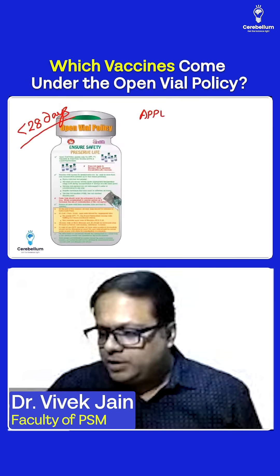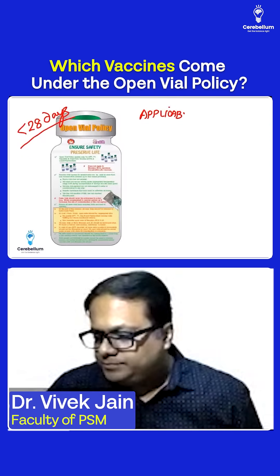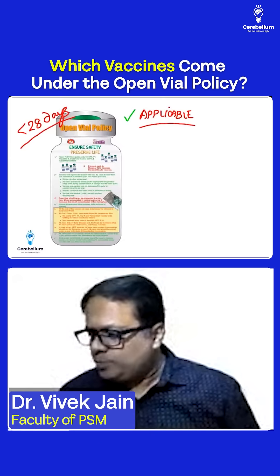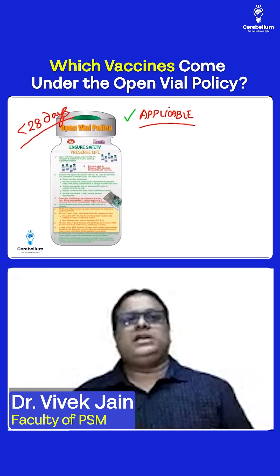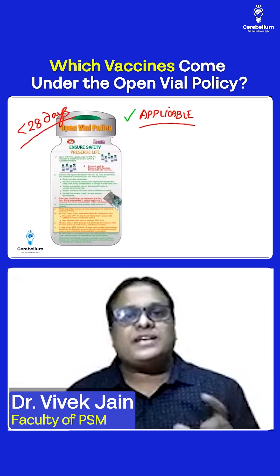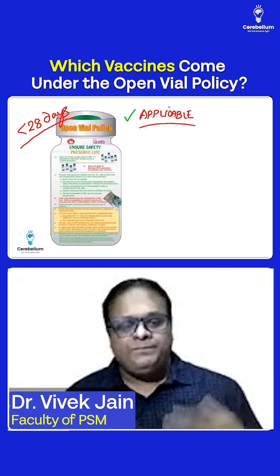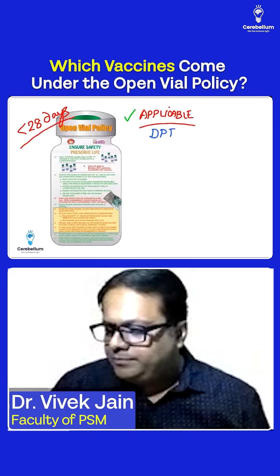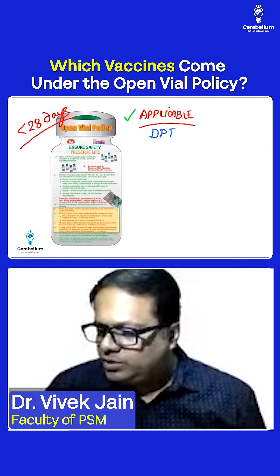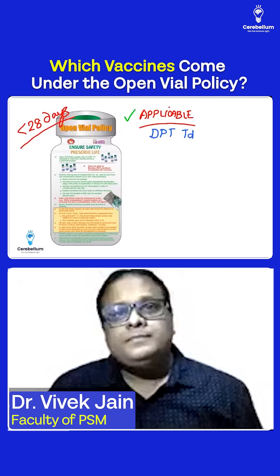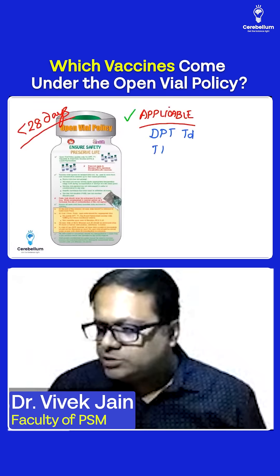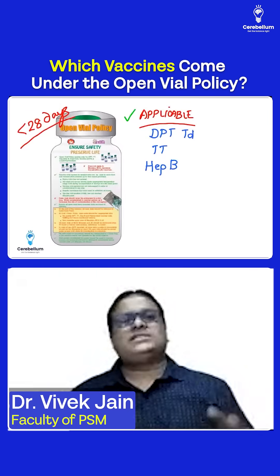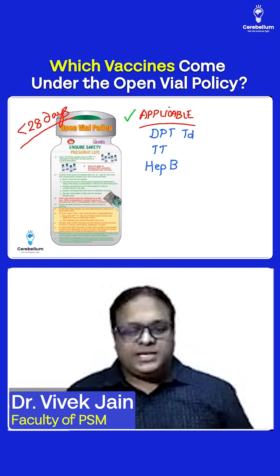Friends, please remember the open vial policy is applicable on the T-series of vaccines — T for tetanus. The vaccines included in the T-series are: DPT, TD, tetanus toxoid, and hepatitis B. So these vaccines are included in the T-series.